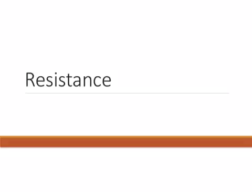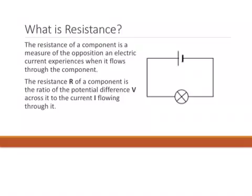The second part of the series of lectures on electricity is on resistance. The resistance of a component is a measure of the opposition an electric current experiences when it flows through the component.